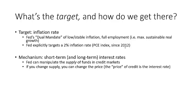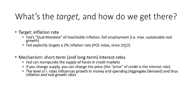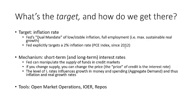You change supply, you can change the price. Changing the price of credit — the interest rate — will influence the growth rates of money and spending, also known as aggregate demand or total spending in the economy. That will then influence inflation and real growth rates. We'll think about that with respect to the quantity theory of money equation, MV equals PY. We'll also talk about the tools the Fed uses to pursue these interest rate changes.